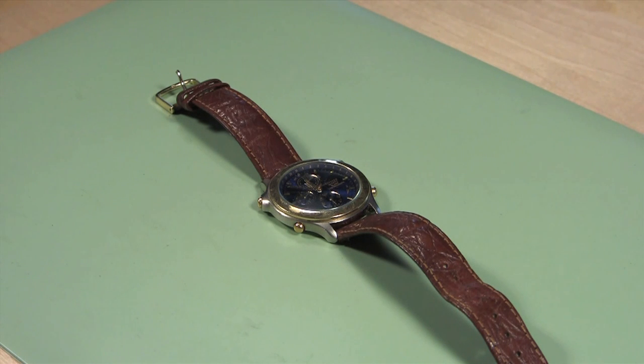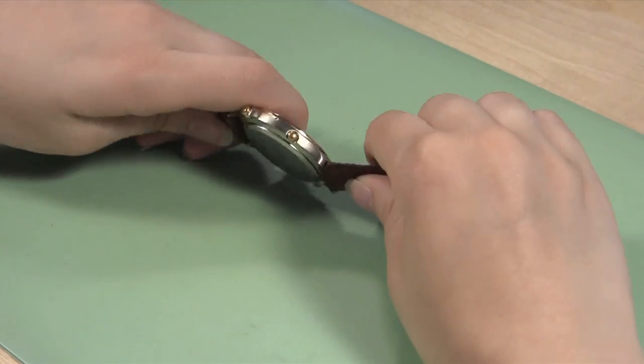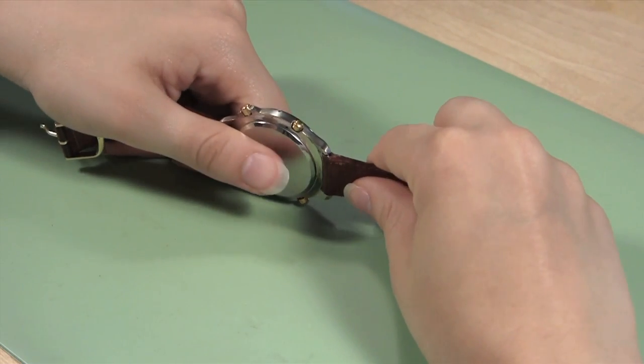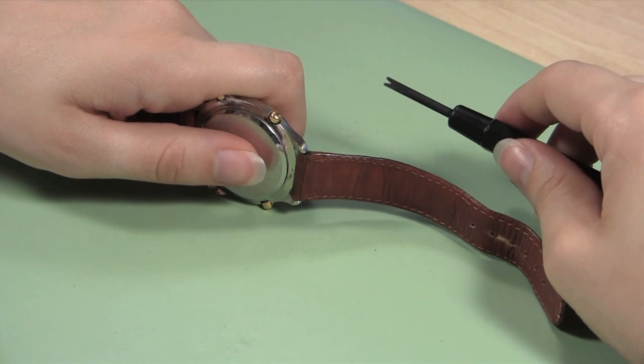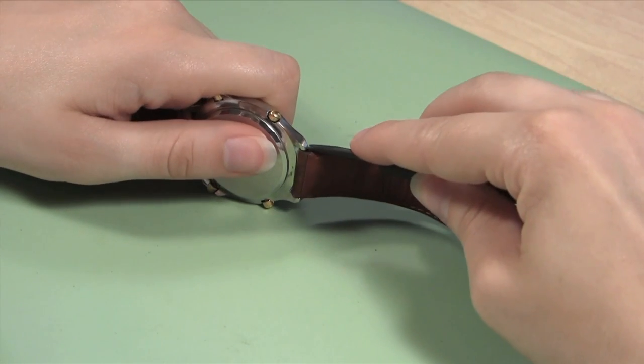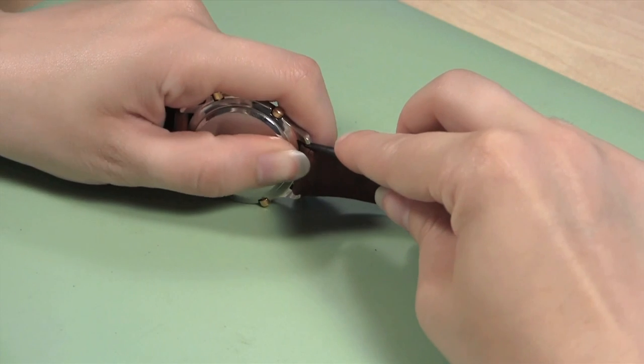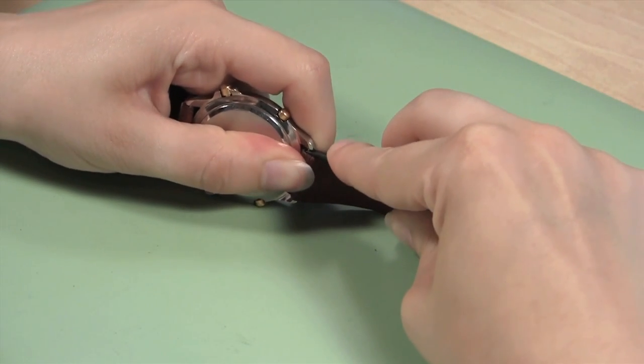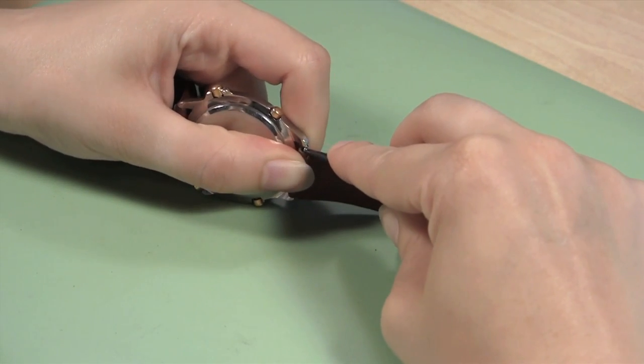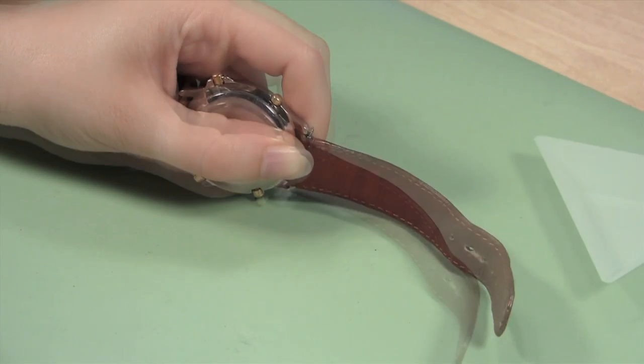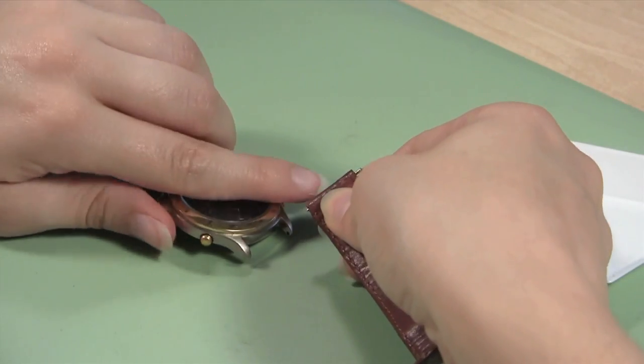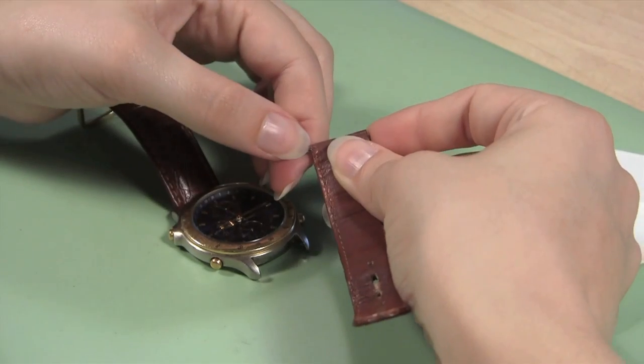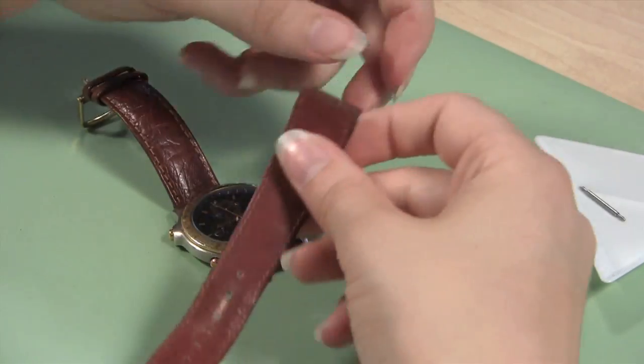The first step in changing your watch band is to remove the existing watch band. Start by holding the watch so that it is sitting on its side with the watch crown pointing up. Hold the watch case so one side of the band is facing you. Take your spring bar tool and slip the forked end under the top lug. When the point catches on the spring bar, push down and then to the side to pop the spring bar free. When the spring bar is free, you can pull that end of the watch band out of the case. Take out the spring bar and set it aside in the parts tray in case you can reuse it.